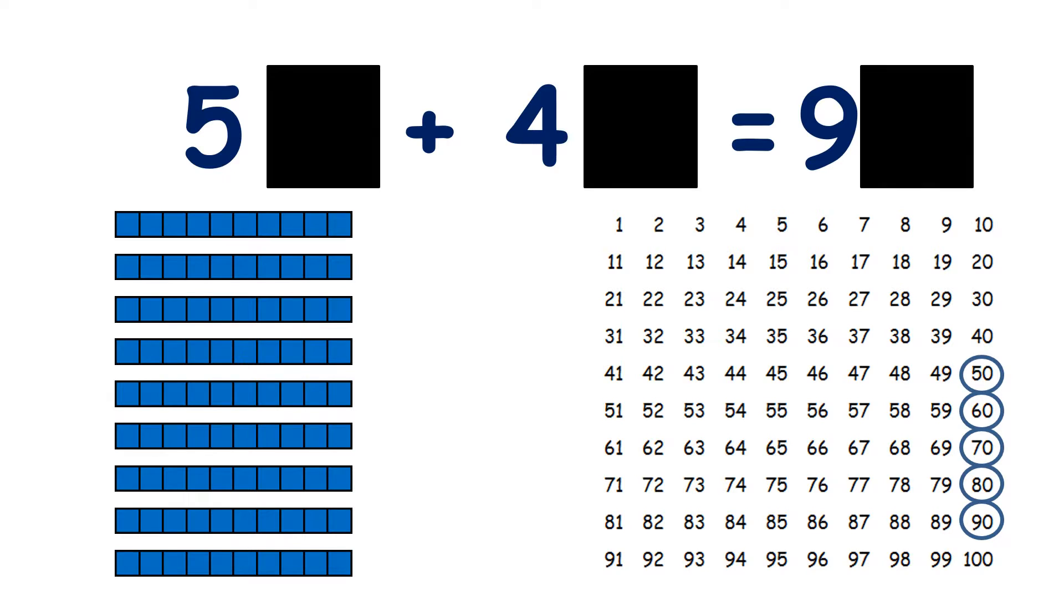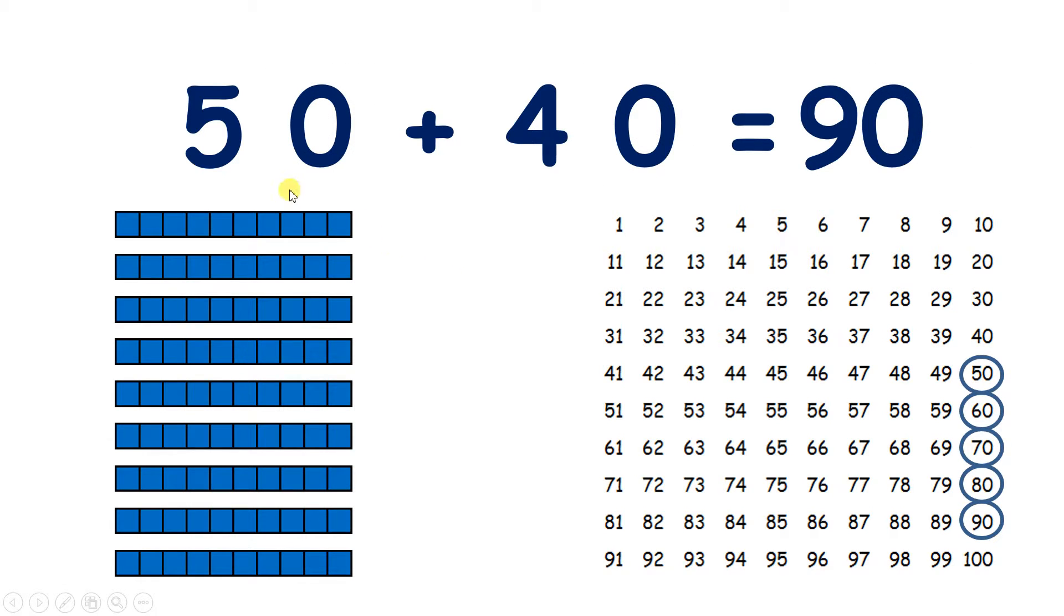And again, notice the similarity when adding tens and adding units. 5 plus 4 is 9. So 5 tens plus 4 tens is 9 tens, or 90.